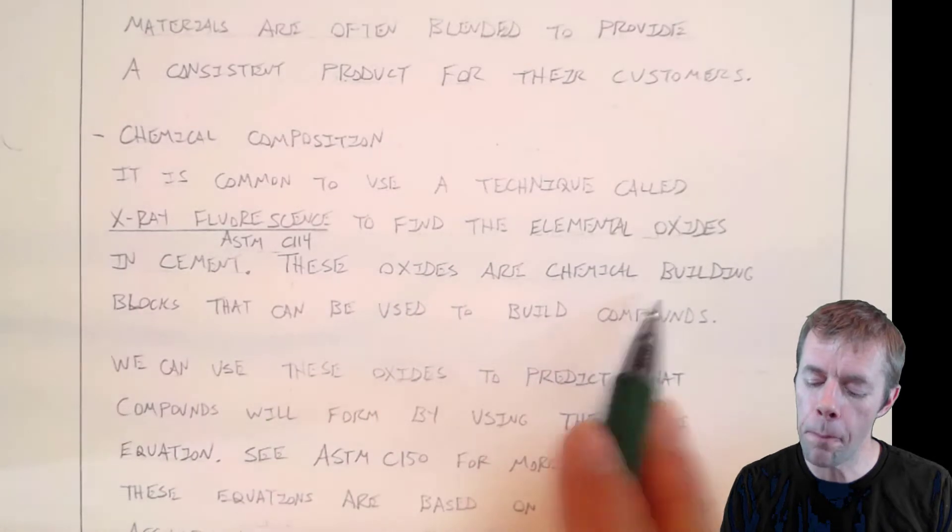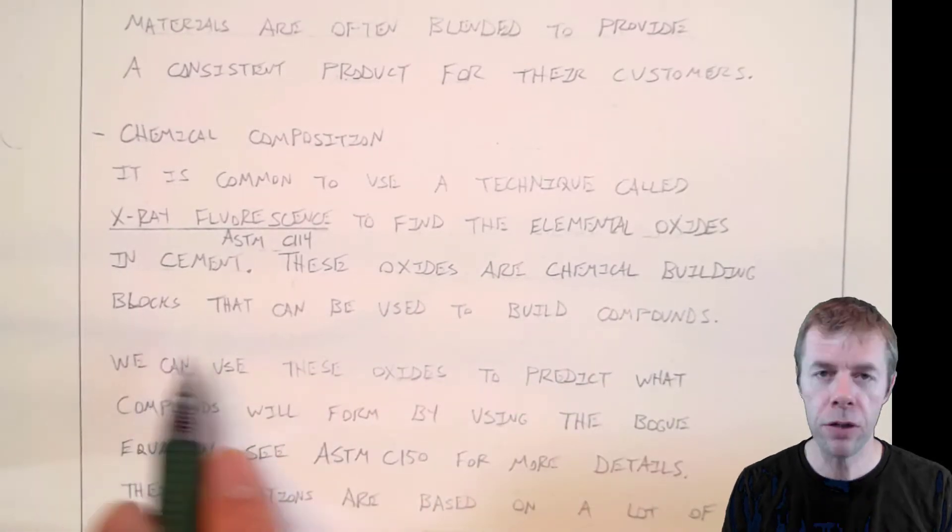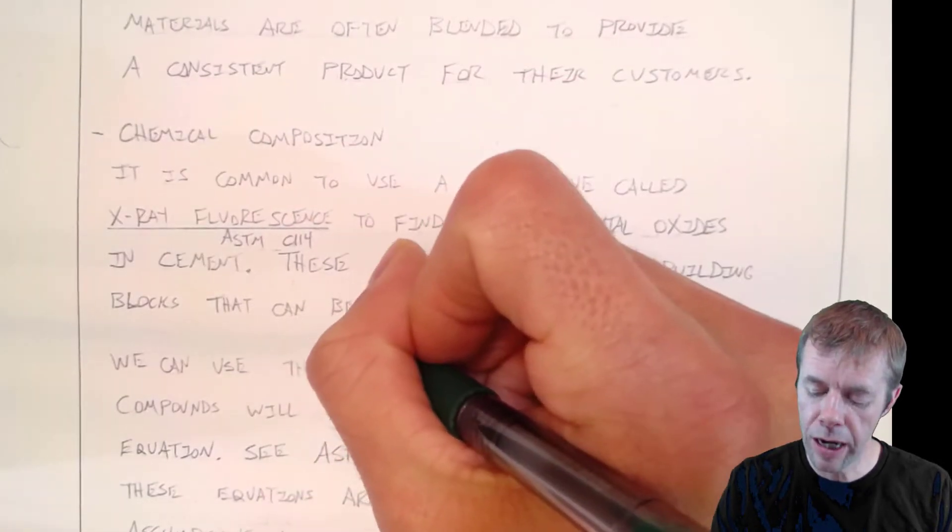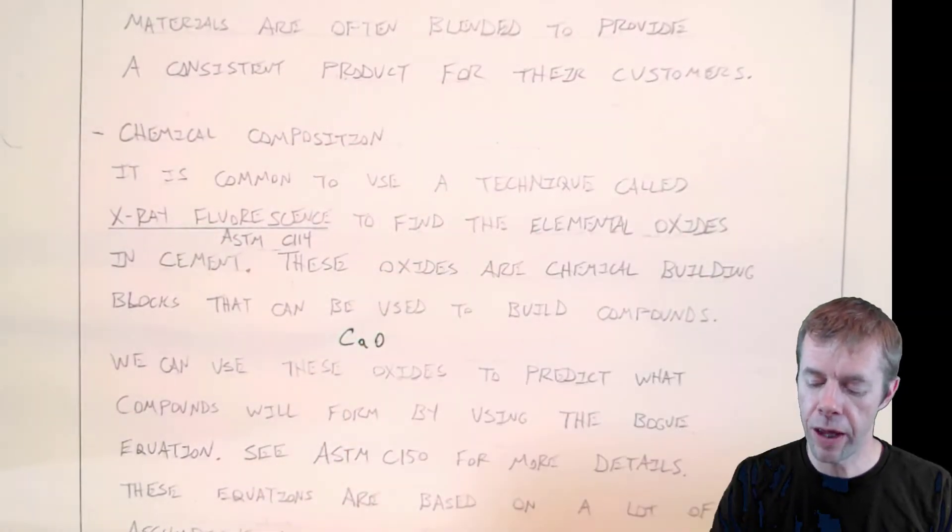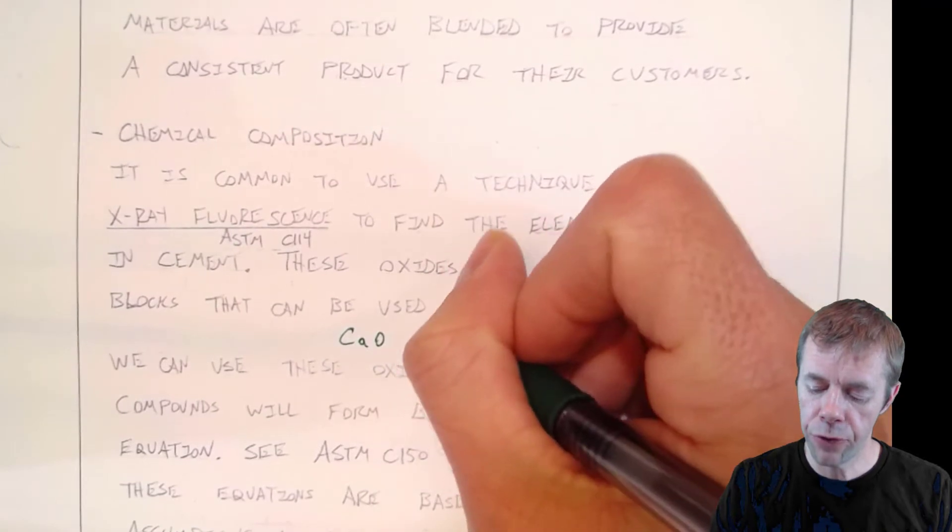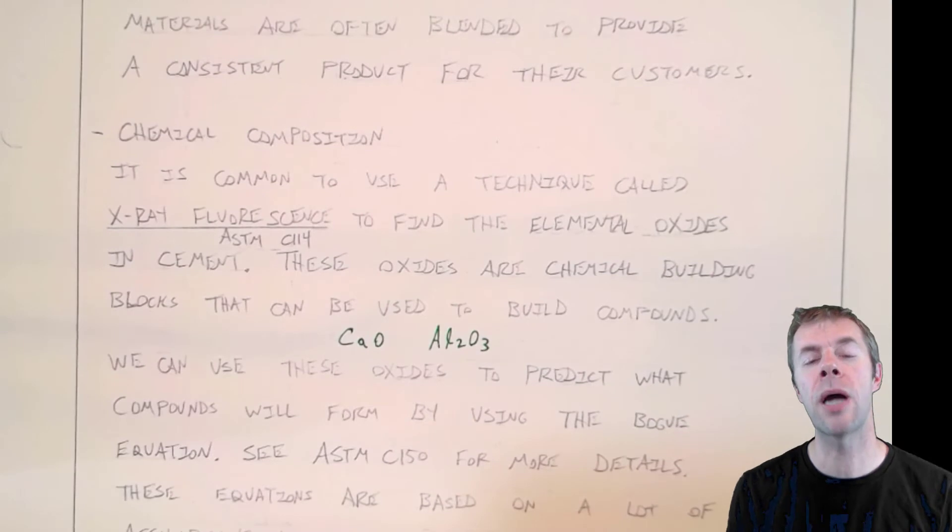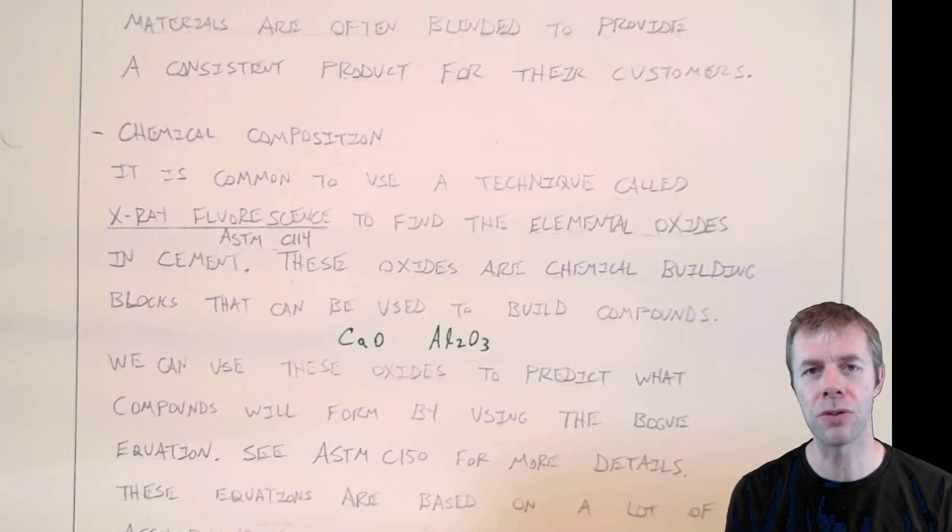We use this for our cements and it tells you the oxides. It tells you the chemical building blocks that can be used to build certain compounds. When we talk about something like calcium oxide or Al2O3, that's the type of information.